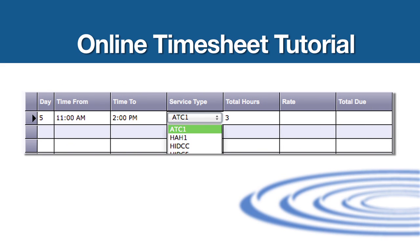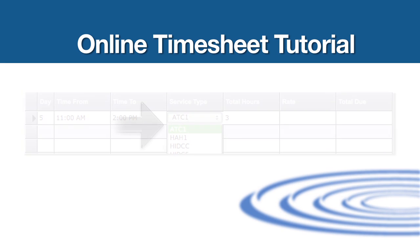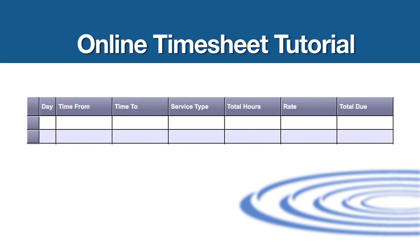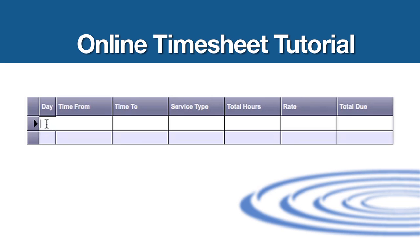Choose the proper service code in the next box and click the Tab key. For example, if you worked on the 5th from 11 AM until 1 o'clock PM on habilitation with the individual you provide services to, your entry for this would be as follows.